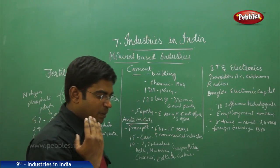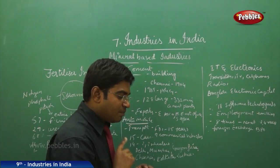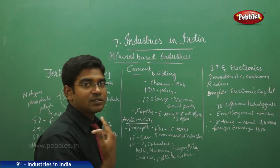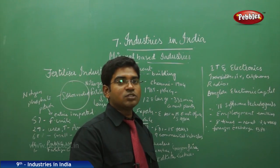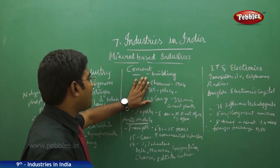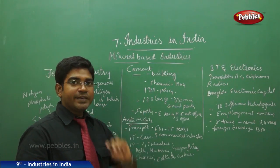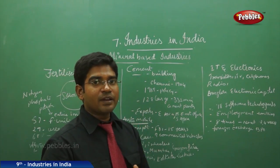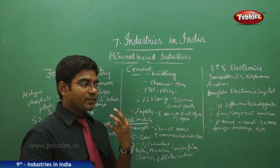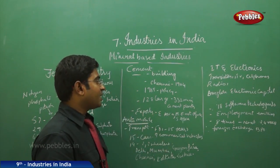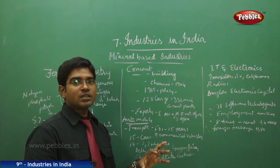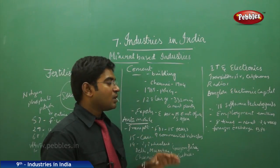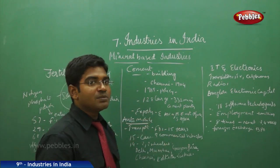Moving on to the cement industry, cement is needed to build anything — houses, offices, roads, bridges — so cement production is highly required in India. The first cement plant was established in Chennai in 1904, but major focus on cement development came after independence. In 1989, the policy changed and firmly brought the development of the cement industry on a larger scale.